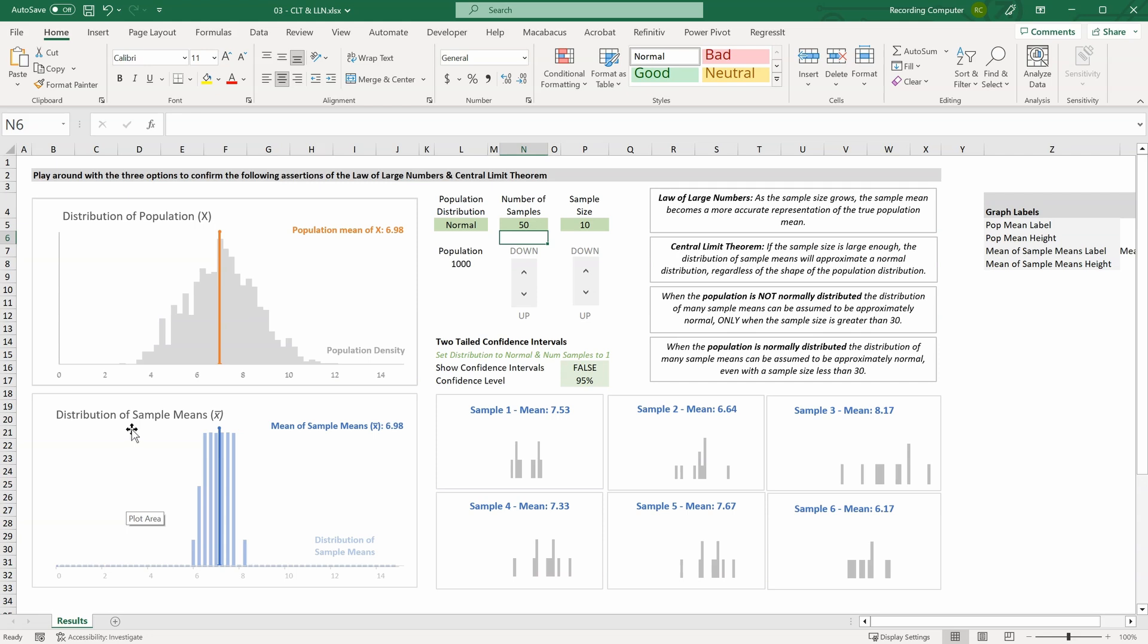The first part of this definition states if the sample size is large enough. To also explore this idea further, we need to consider these second and third definitions underneath. So if our population is not normal, the distribution of many sample means can be assumed to be approximately normal only when the sample size is greater than 30. So we'll keep the sample size at 10, but let's reduce our number of samples to 10 as well.